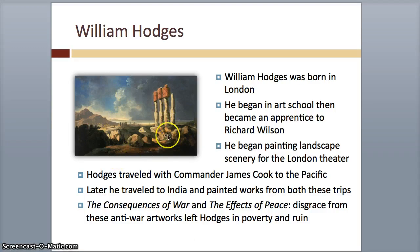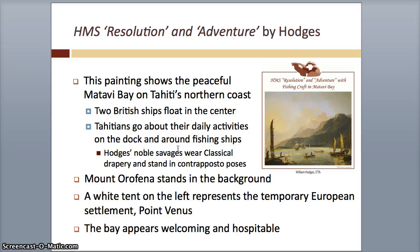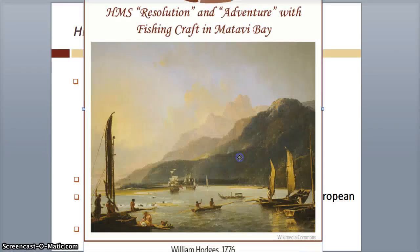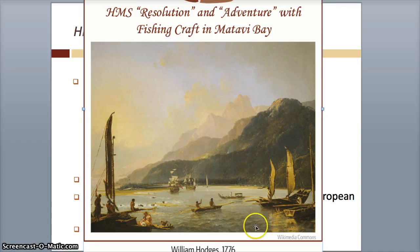Here's a painting called A View of the Monuments by William Hodges. This is the Matavai Bay on Tahiti's northern coast. Two British ships float in the center. The Tahitians go about their daily activities on the dock and around fishing ships. Hodges' noble savages wear classical drapery and stand in contrapposto poses. Mount Orofena stands in the background, and a white tent on the left represents the temporary European settlement at Point Venus. The bay appears welcoming and hospitable. You can see the English ships and the noble savages — two men paddling a canoe, people on boats going about their daily activities. He used a lot of scale, so you can tell the mountains are huge based on how tiny the things in the foreground are.